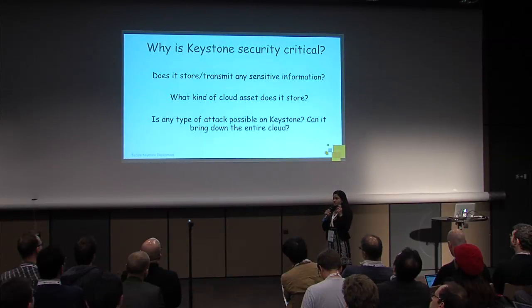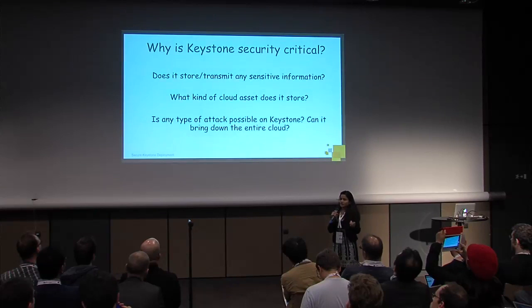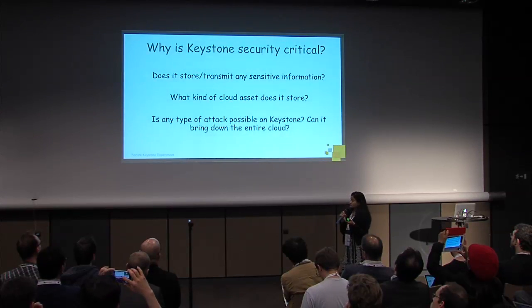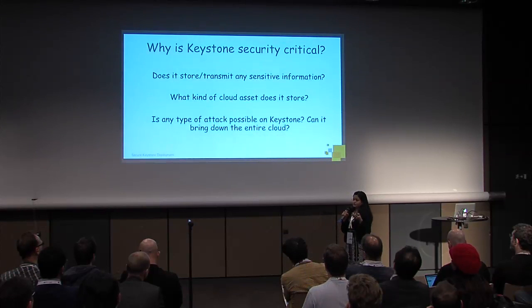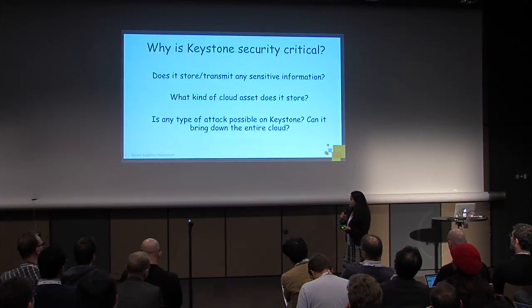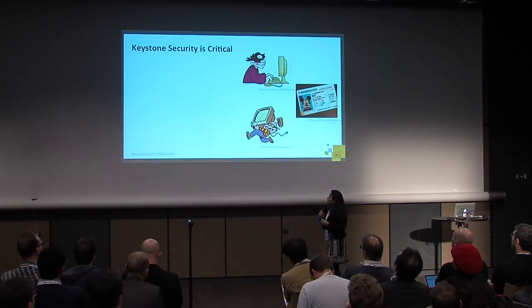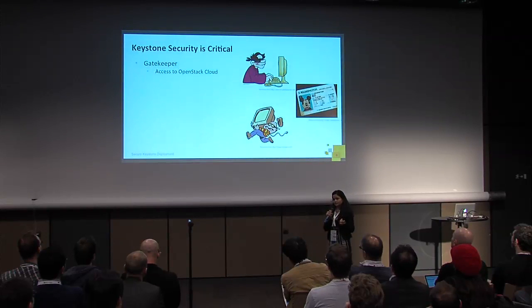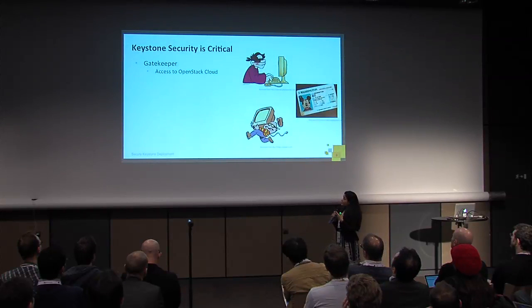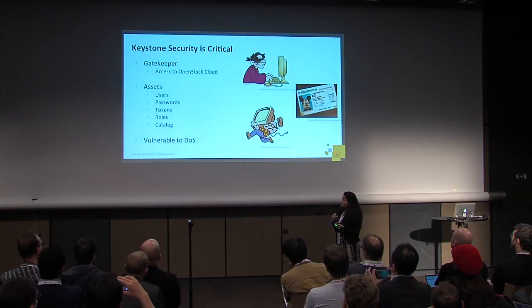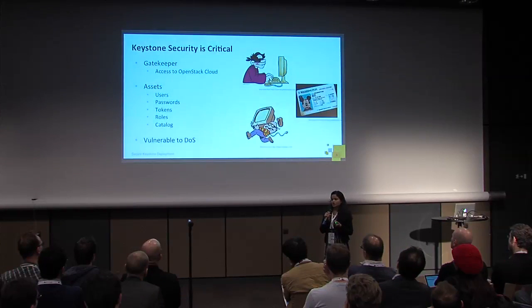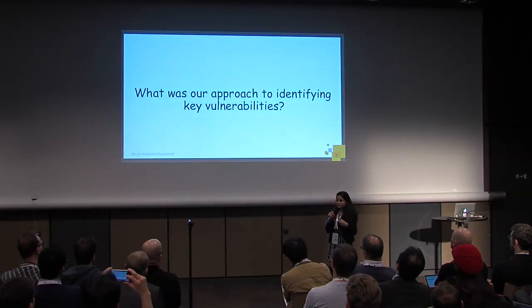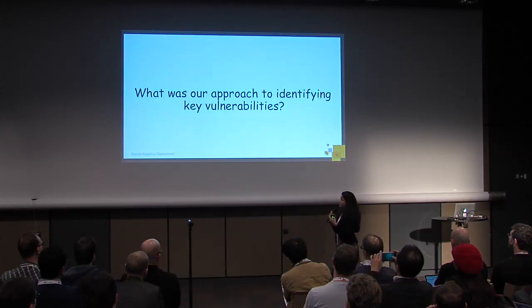So what kind of cloud assets does it contain? Is there any type of attack possible on Keystone? Can it bring down the entire cloud? If Keystone is attacked, can it bring down the entire cloud? Like I said, it is a gatekeeper for accessing your entire cloud. It allows you to access the OpenStack cloud. It has all these assets. And also, it is vulnerable to denial of service. Let's look at what our approach and strategy was to identify the vulnerabilities in our deployment of Keystone.